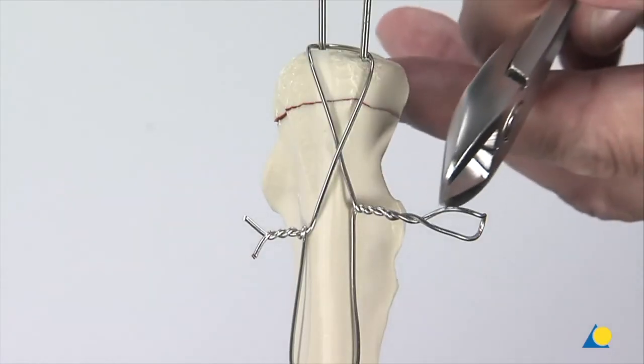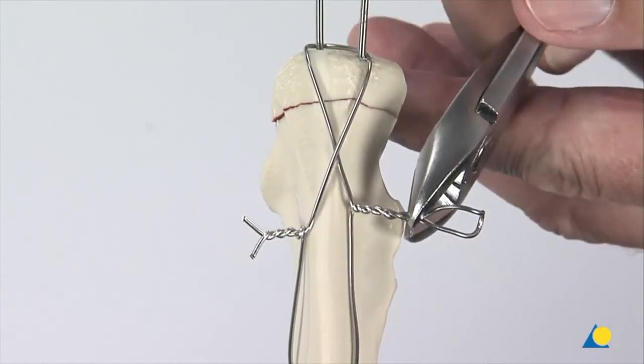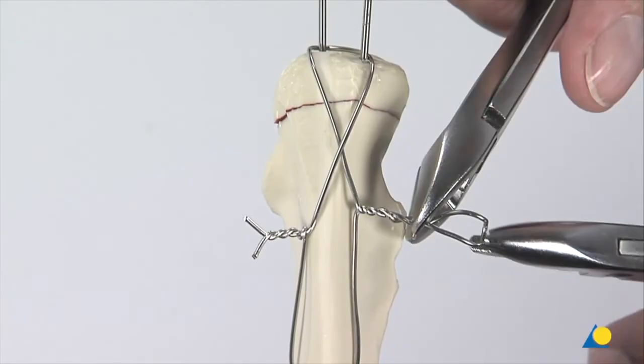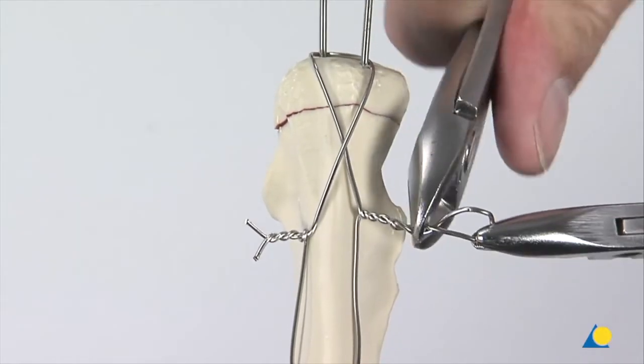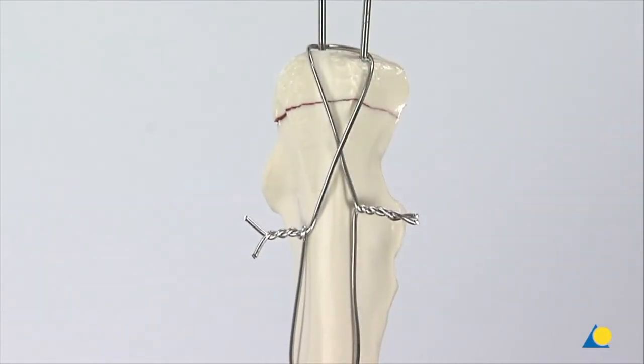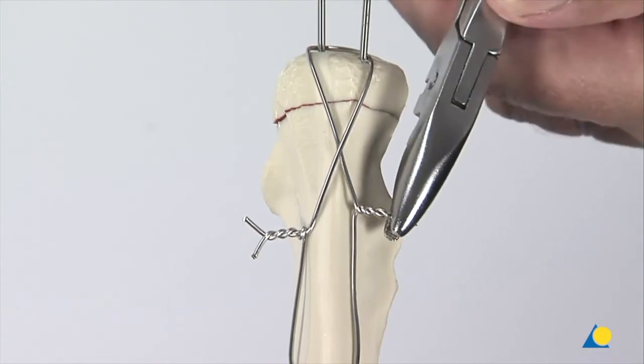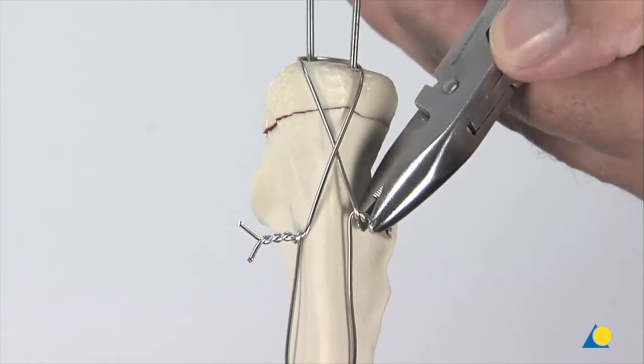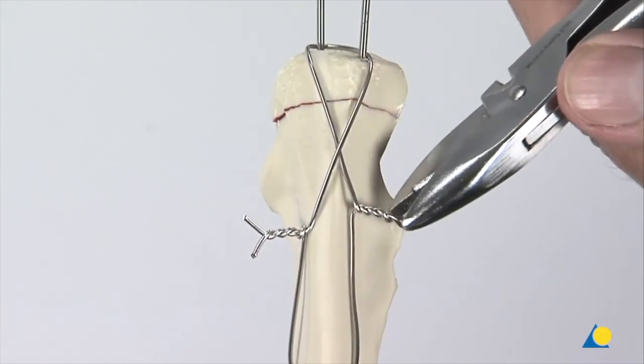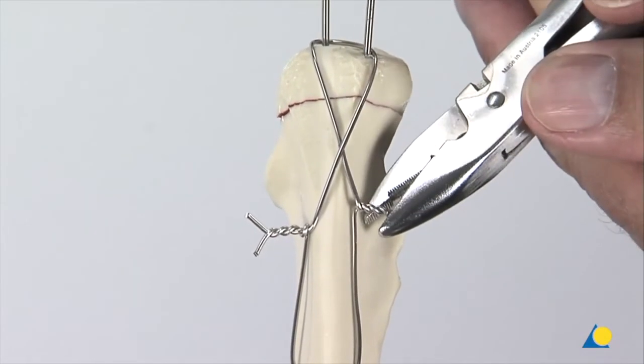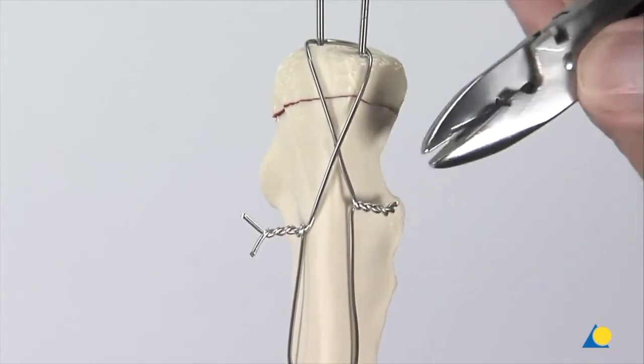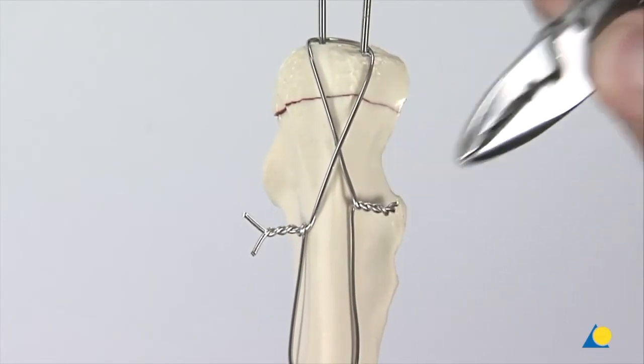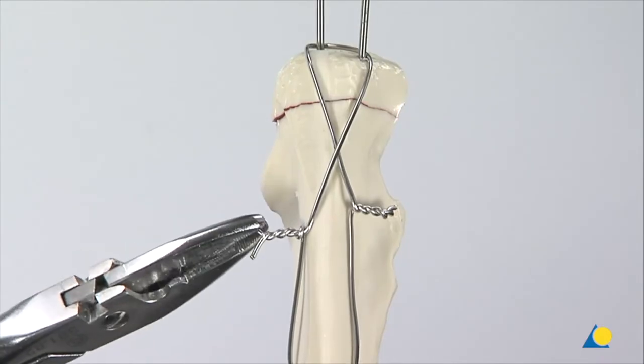The excess wire is trimmed with the wire cutter. Using the wire bending pliers, the wire is bent so that it lies close to the bone. This step is repeated on the other side.